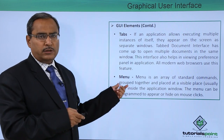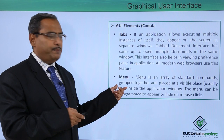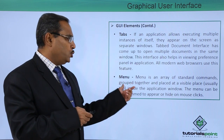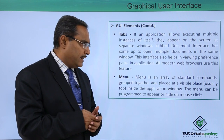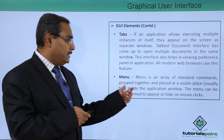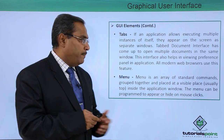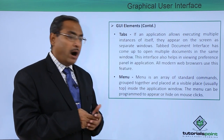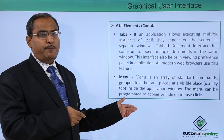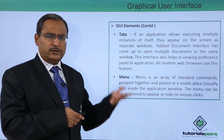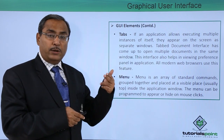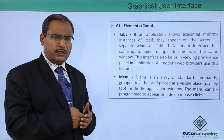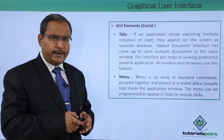Next, we are considering the GUI component: menu. A menu is an array of standard commands grouped together and placed at a visible place inside the application window. The menu can be programmed to appear or hide on mouse clicks. We can have different kinds of menus — menus and sub-menus, context menus — where multiple options can be listed.